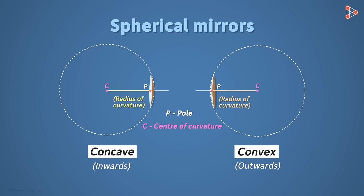Join the pole and the center of curvature with a line. This line is called the principal axis. The midpoint of the line segment joining the pole P and the center of curvature C is called the focal point. It's denoted by the letter F.